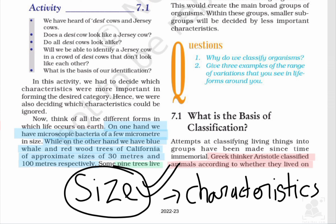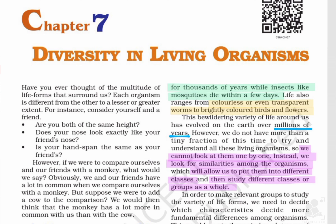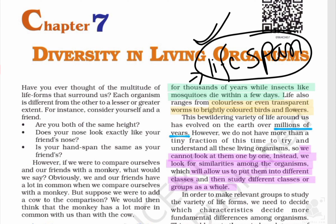अगला example है pine trees का। Pine trees live for thousands of years, while insects like mosquitoes die within a few days। तो यहाँ पे consideration में ले रहे हैं life span — यह एक characteristic है जिसके basis पे हम लोग organisms को divide कर रहे हैं।